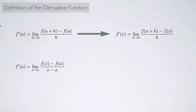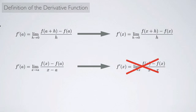We also have an alternate way of writing the derivative at a point a. If we simply replace a with x in that form, we get the limit as x approaches x, which doesn't make sense — it's full of x's. So instead we introduce a dummy variable, say w. The alternate definition becomes: f prime of x equals the limit as w approaches x of f of w minus f of x all over w minus x.